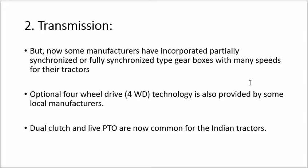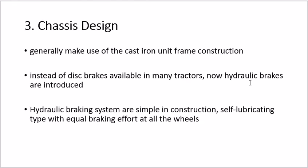Manufacturers have incorporated partially synchronized or fully synchronized top gear with many speeds. Optional 4-wheel drive can be included depending on the application. A dual clutch and live PTO system is also included — one clutch is for the engine and one is for the PTO shaft. Live PTO means while the tractor is traveling, you can simultaneously use the PTO. Earlier, either the engine would travel or the PTO would work, but now both can operate at the same time.